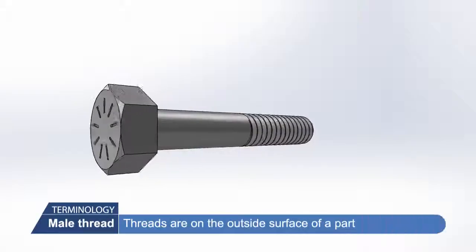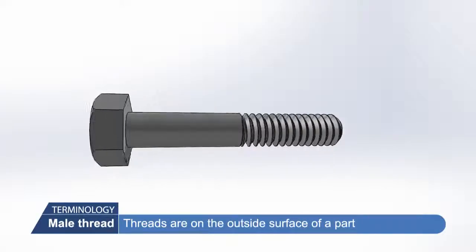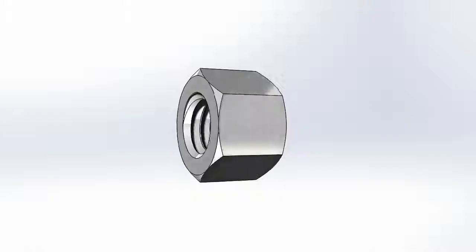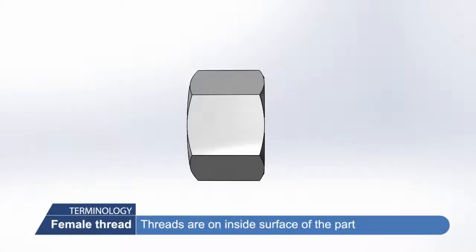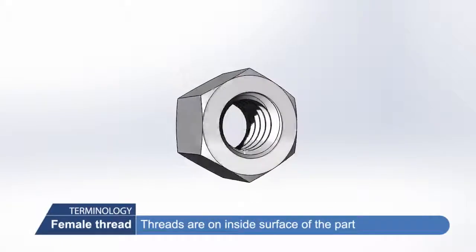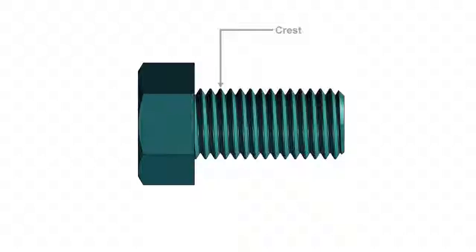Male thread: threads are located on the outside surface of the part. Female thread: the threads are located on the inside surface of the part.